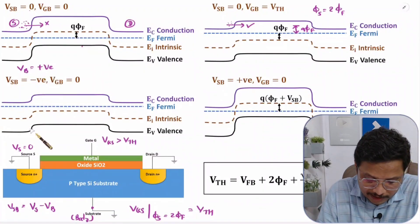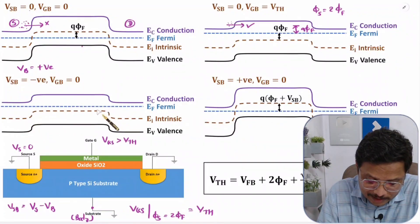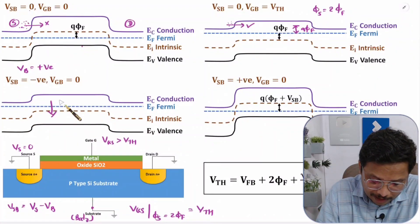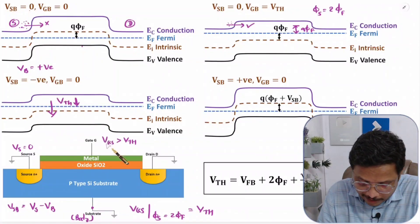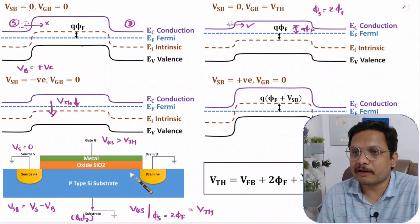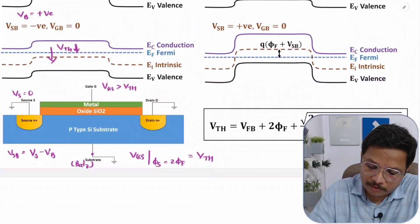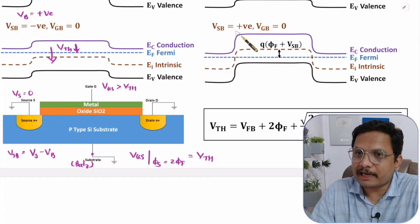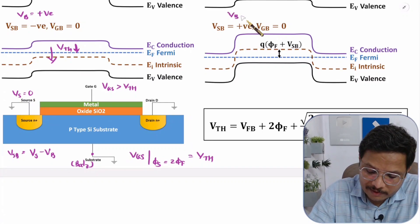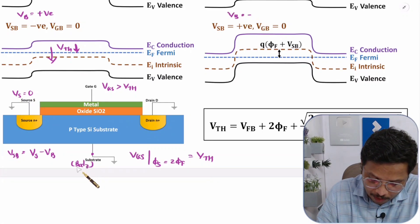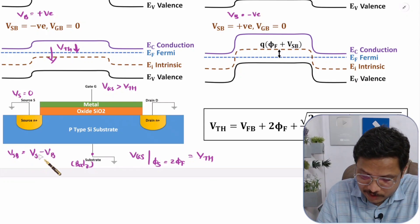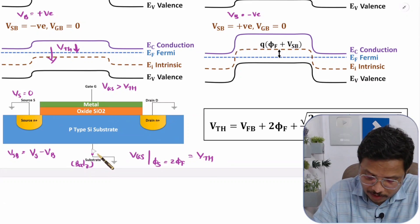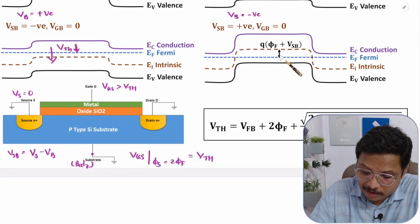If body voltage is positive, the intrinsic energy shifts downward, which means threshold voltage will decrease. As threshold voltage decreases, at a lower gate voltage there will be formation of an inversion layer. Now, if VSB is positive, it means body voltage is negative.